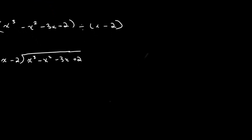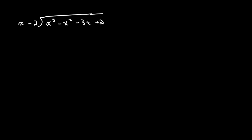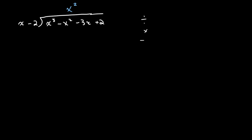When doing this long division, we'll be following three steps every round: first we divide, then we multiply, then we subtract. Initially, we divide the first term x cubed by x, which gives us x squared. Now we multiply x squared by x minus 2, and this gives us x cubed minus 2x squared.